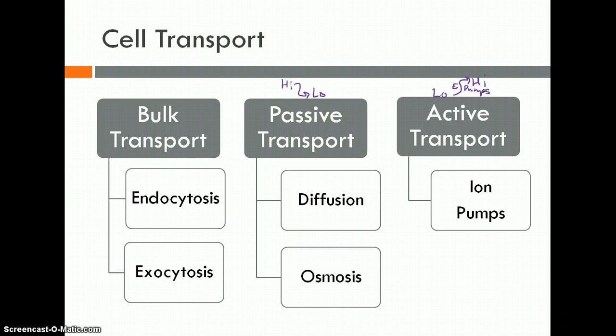My favorite is bulk transport, which involves transporting big, big quantities of stuff either into or out of the cell. There are two examples we're going to look at: endocytosis and exocytosis.